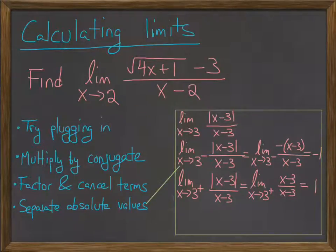So if the problem was just to find this limit, the limit as x goes to 3 of absolute value x minus 3 over x minus 3, the answer would be that it doesn't exist, because the limit from the left and the limit from the right are not equal to each other.